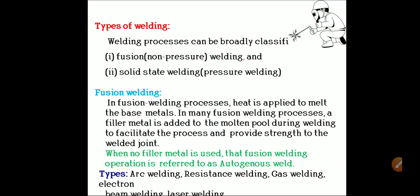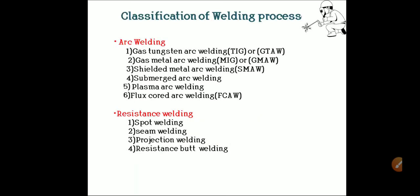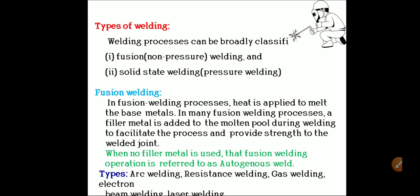Types of welding are basically classified into two sub-categories: fusion welding, where only heat is used without pressure, and solid state welding. In fusion welding, heat is applied to melt the base metal. In many fusion welding processes, a filler metal is added to the molten pool to facilitate the process and provide strength to the weld joint. When no filler material is used, the method is referred to as autogenous welding. Fusion welding types include arc welding, resistance welding, gas welding, electron beam welding, and laser beam welding.